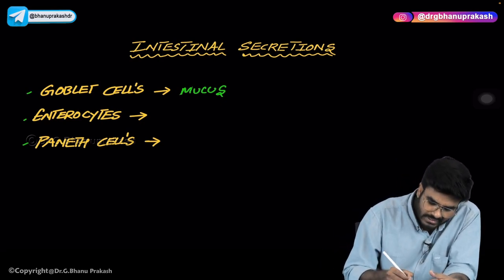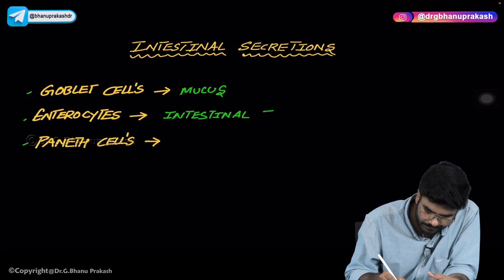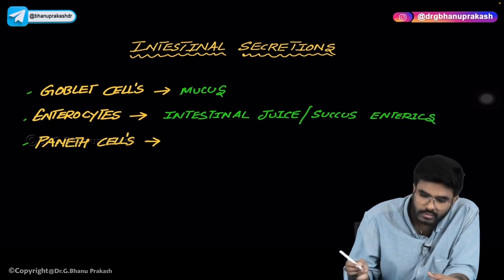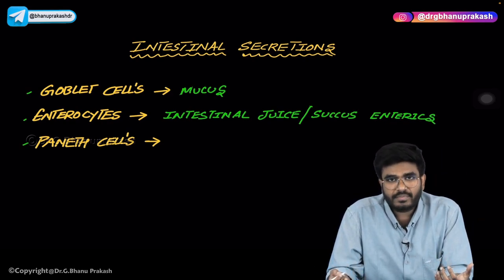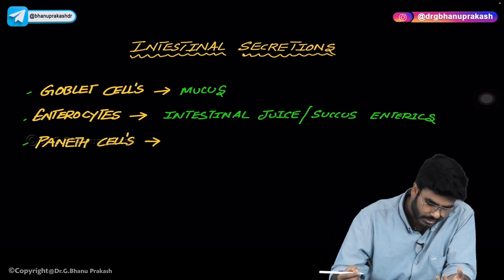What are enterocytes? Enterocytes are the ones which produce intestinal juice, also called succus entericus, which contains a lot of digestive enzymes for protein digestion, lipid digestion, and carbohydrate digestion.